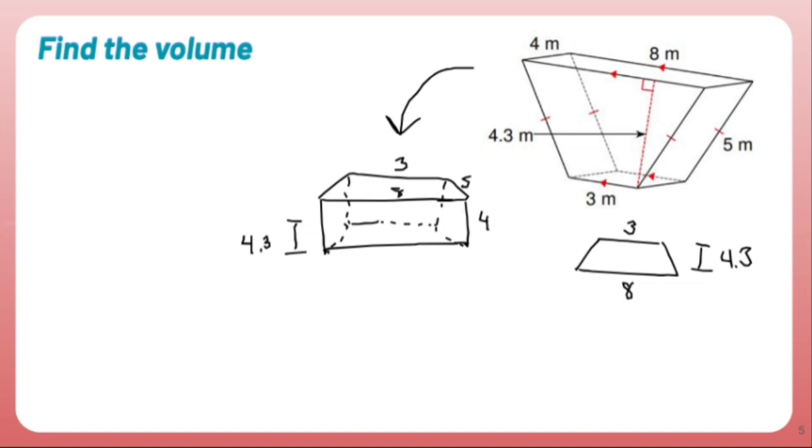So let's put a formula together. This is a prism, and the formula for any prism is the area of the base times the height of the prism itself.